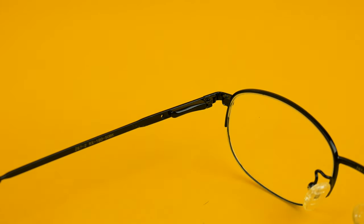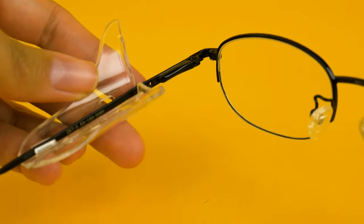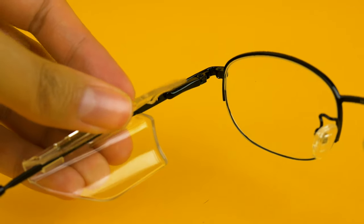To put them back on, you want to make sure to look at this slot right here and put the frame in that slot at an opposite angle, and then twist it like so.